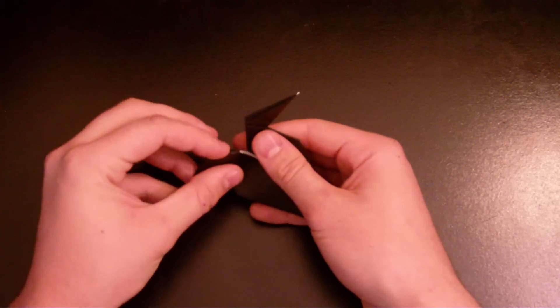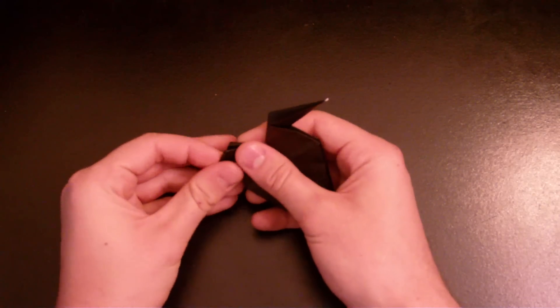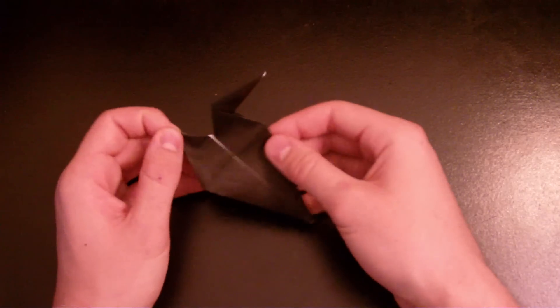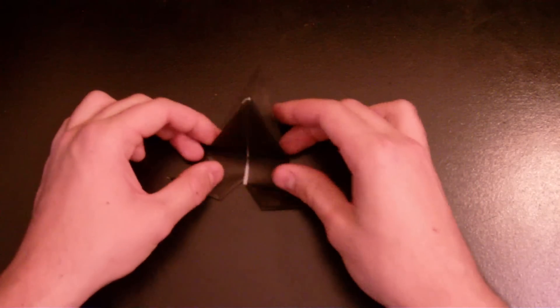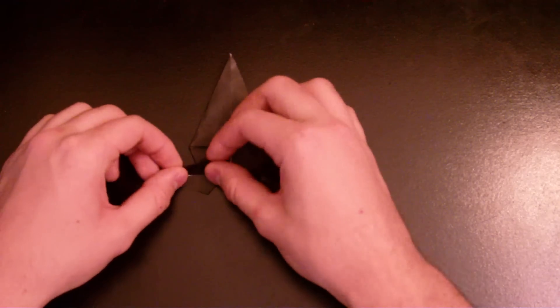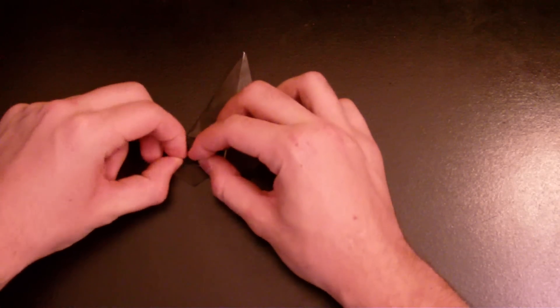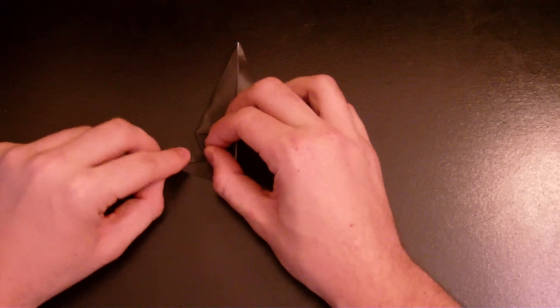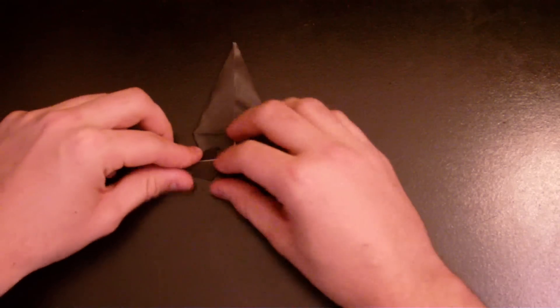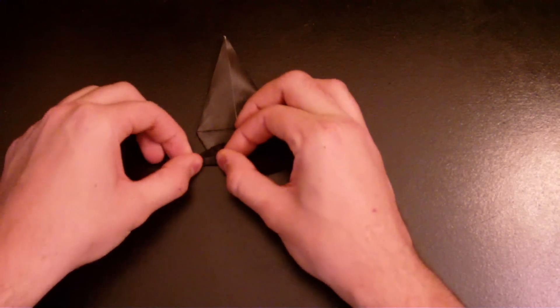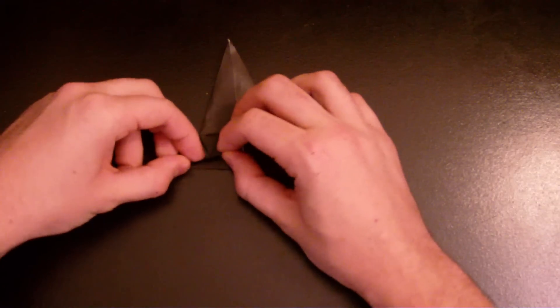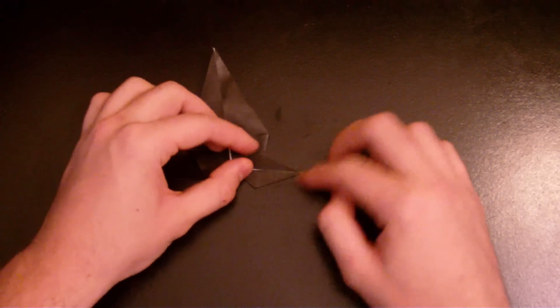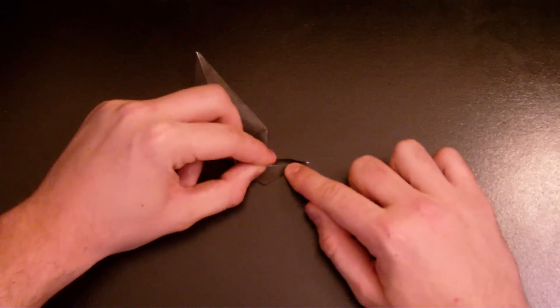Fold it in like that. Now open this side and fold it into the middle line. Fold it in like this. Same thing here and close it. Same thing on the other leg.